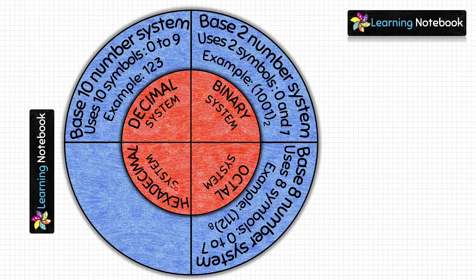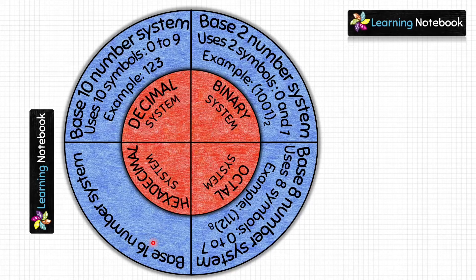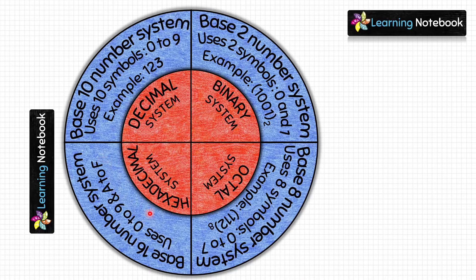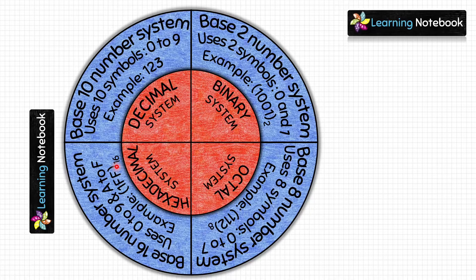Next, we are going to write about the hexadecimal number system. It is a base-16 number system. It uses symbols from 0 to 9 and A to F — 16 symbols in total. An example is 1FF (written with base 16 subscript), which signifies this is a hexadecimal number. So we have written about all four types of number systems.